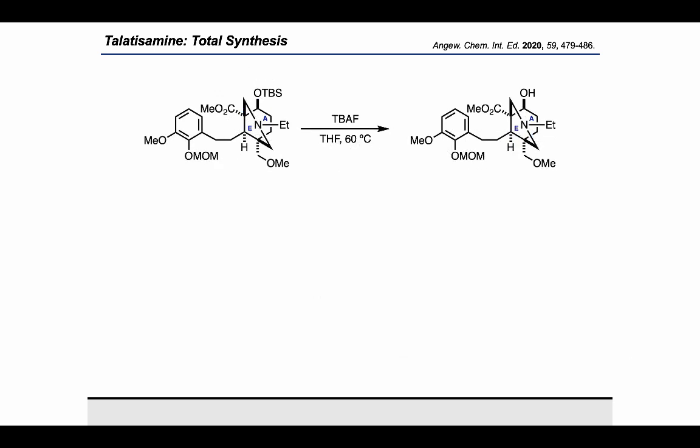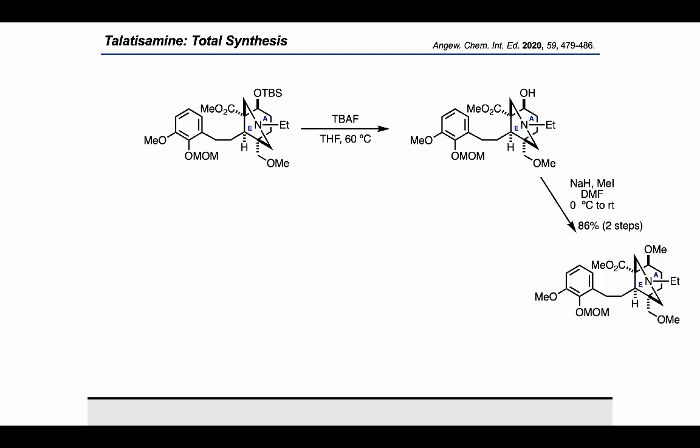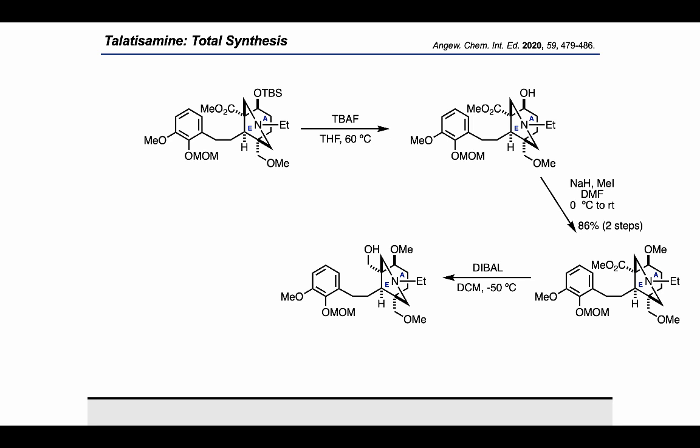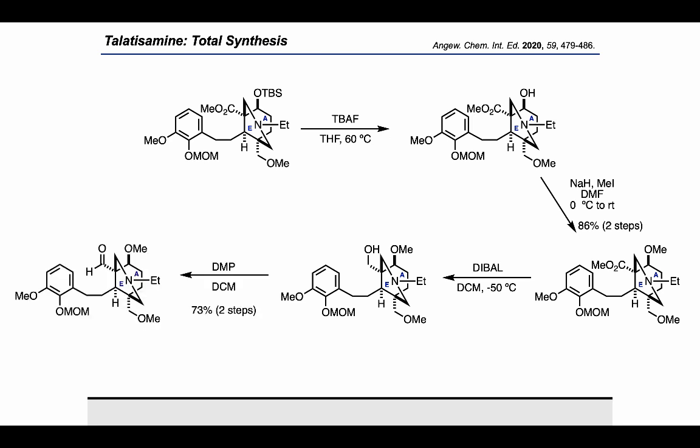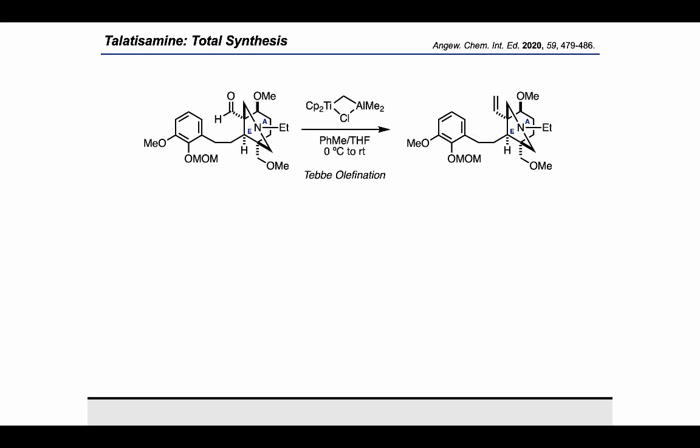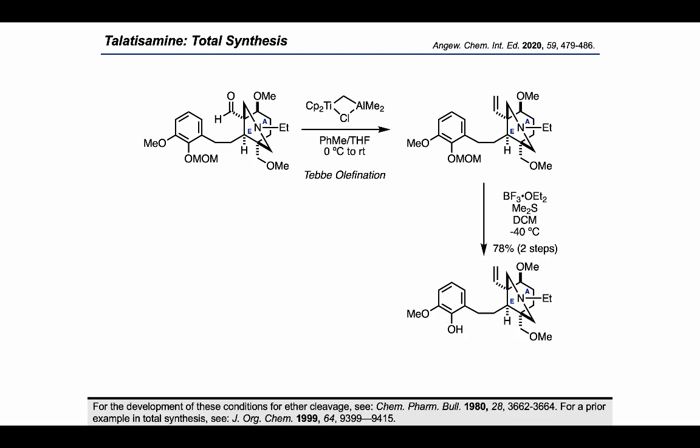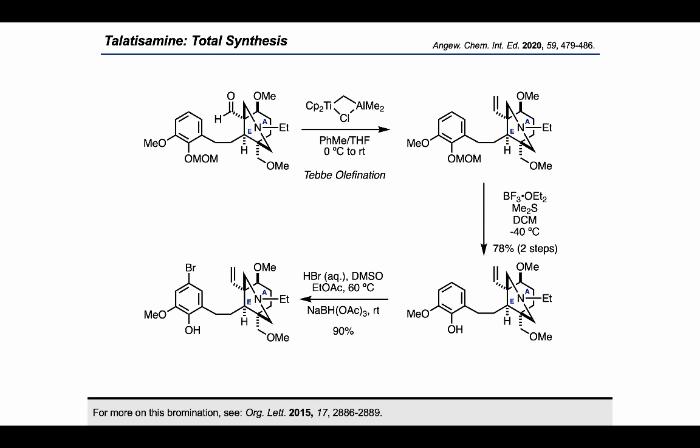Before the next key step, some protecting group manipulations and functional group interconversions were needed. Tetrabutylammonium fluoride was used to remove the TBS group from the secondary alcohol. Sodium hydride and iodomethane were used to convert it into a methyl ether. DIBAL was used to reduce the methyl ester to a primary alcohol, and DMP was used to bring it up to an aldehyde. A Taube olefination could then convert the aldehyde into a terminal alkene. Using ethereal BF3 and dimethyl sulfide, they removed the MOM group from the pendant aromatic ring. They also found it advantageous to install a bromine on the aromatic ring using the conditions shown.